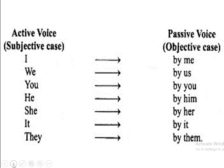Let us now understand the subjective and objective case in active and passive voice. 'I' generally becomes 'by me'; 'we' becomes 'by us'; 'you' becomes 'by you'; 'he' becomes 'by him'; 'she' becomes 'by her'; 'it' becomes 'by it'; and 'they' becomes 'by them.'